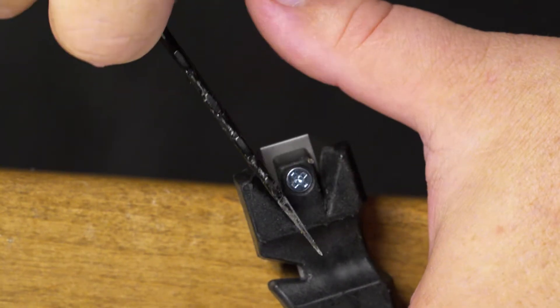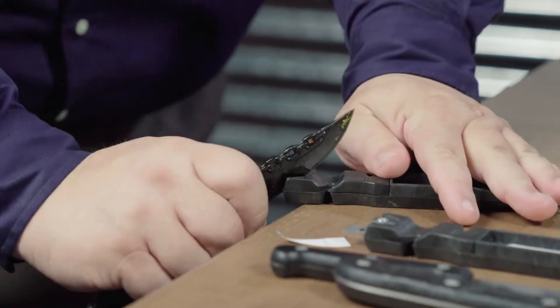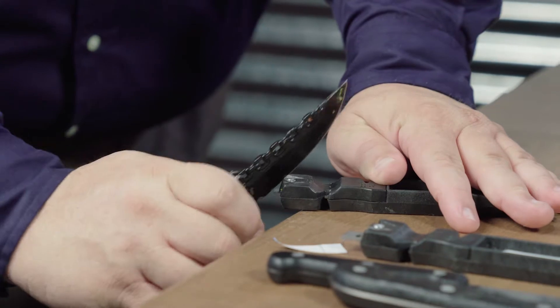If you want to add a little pressure, add some pressure. Use your thumb and sharpen that all the way down here to the base.